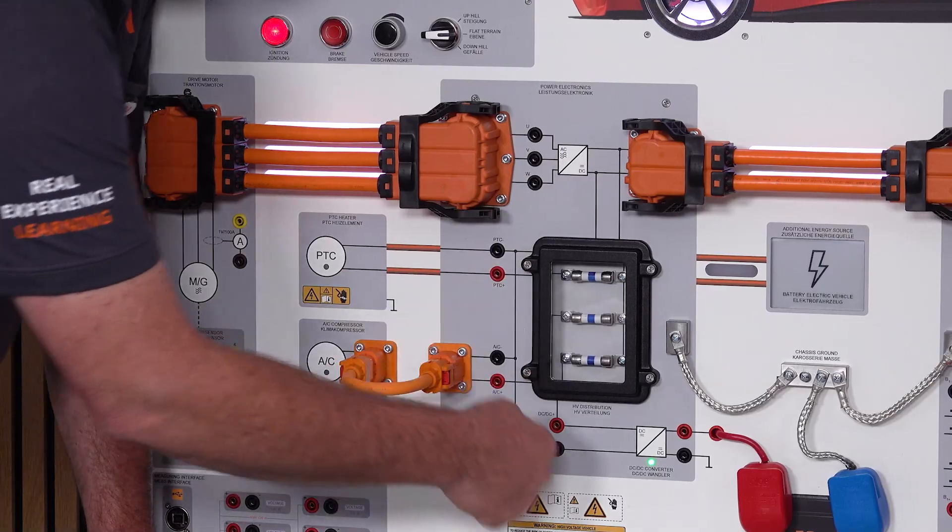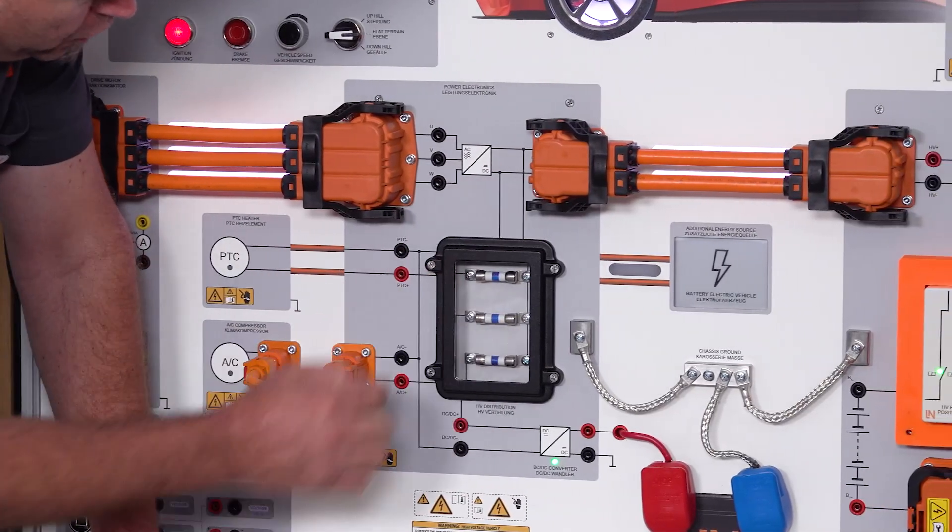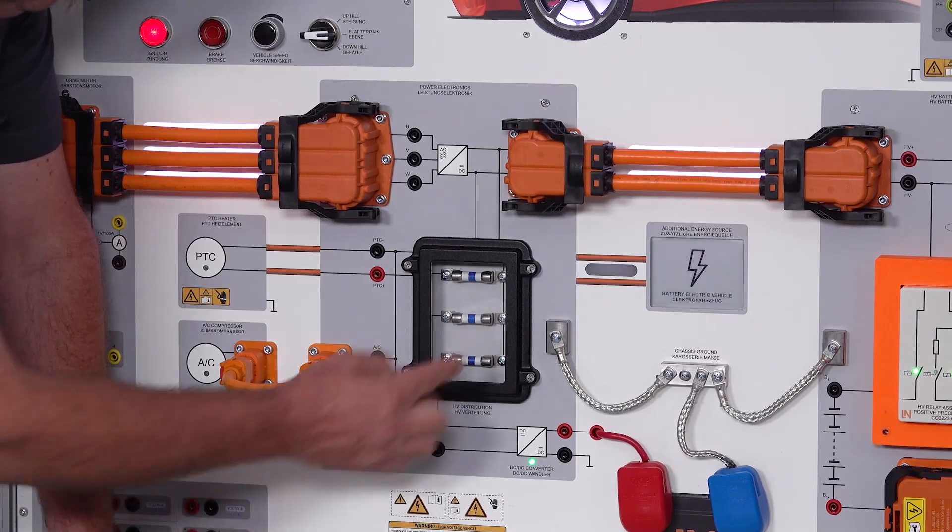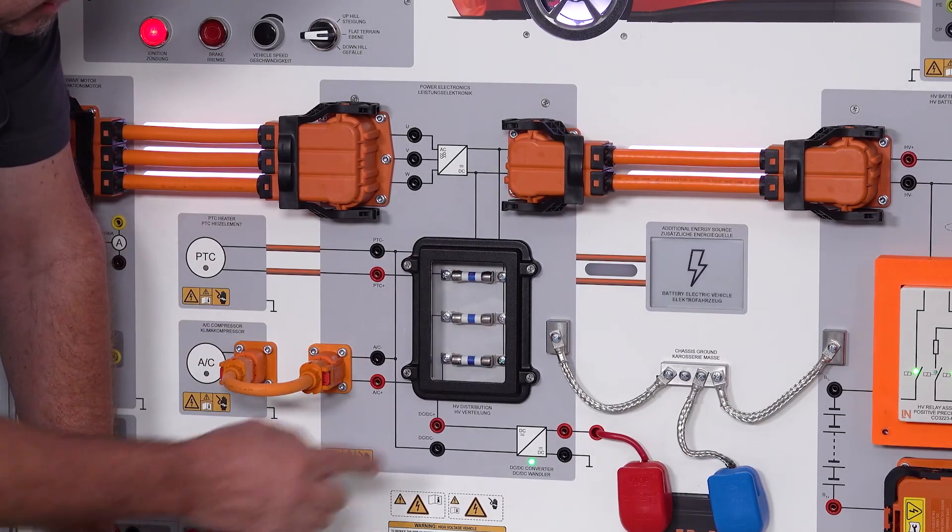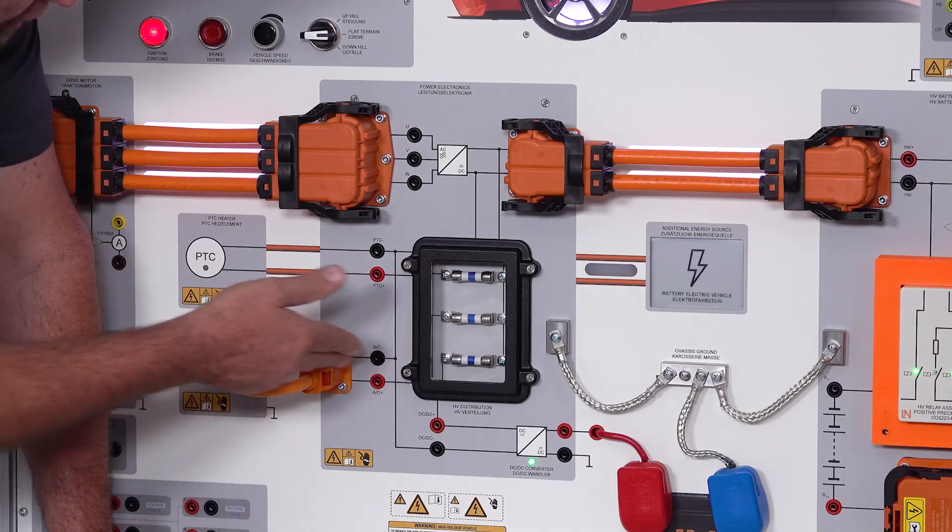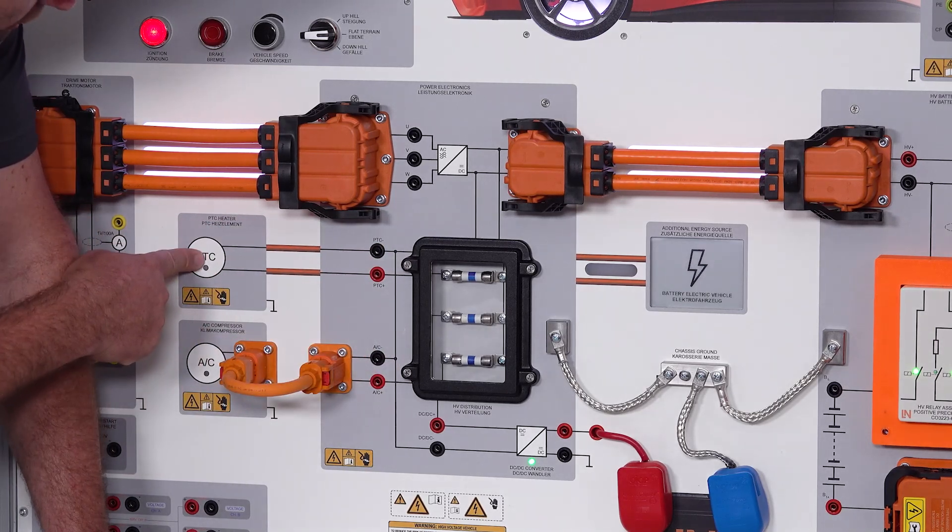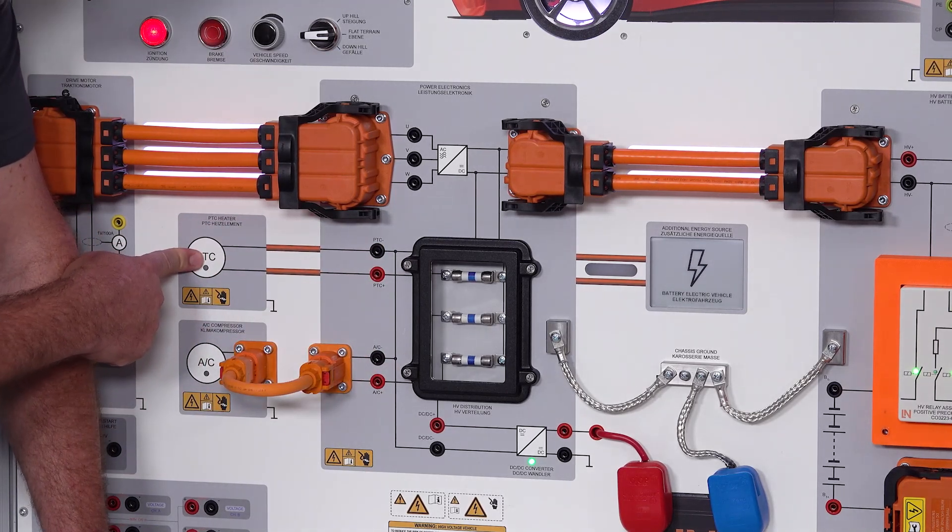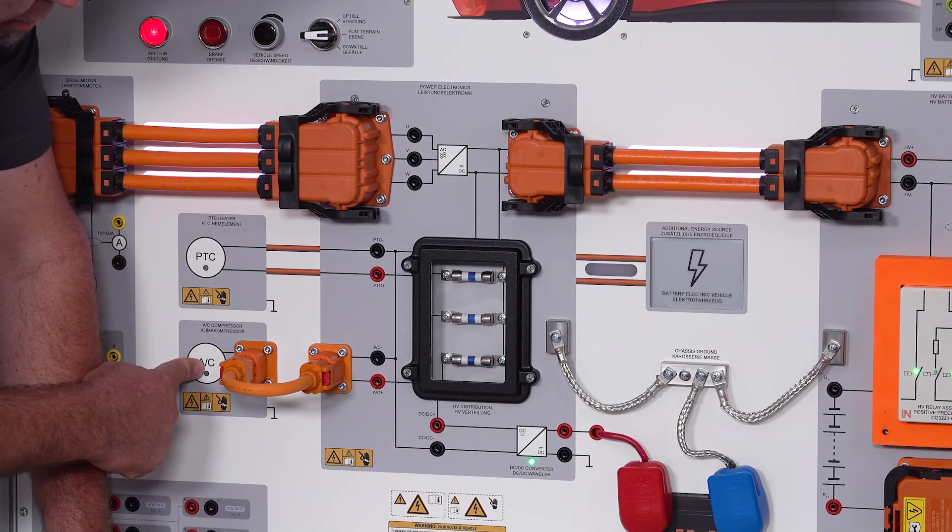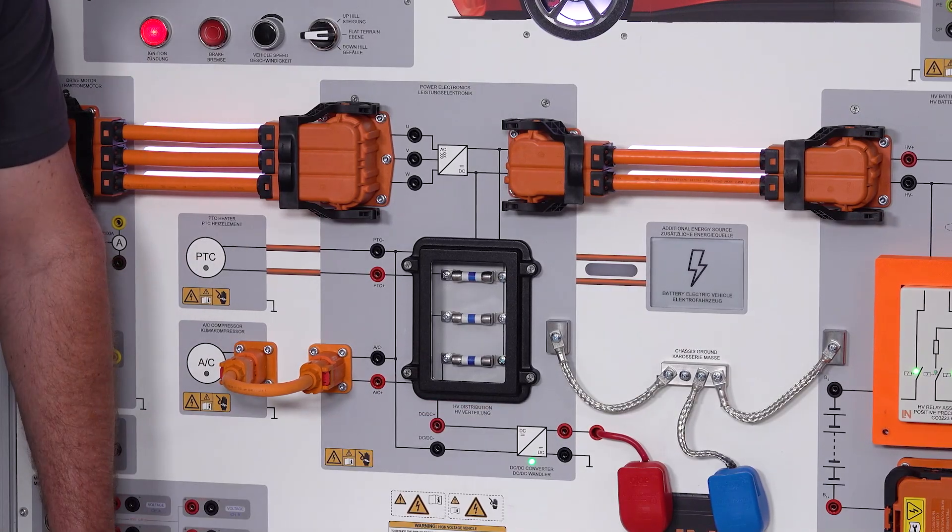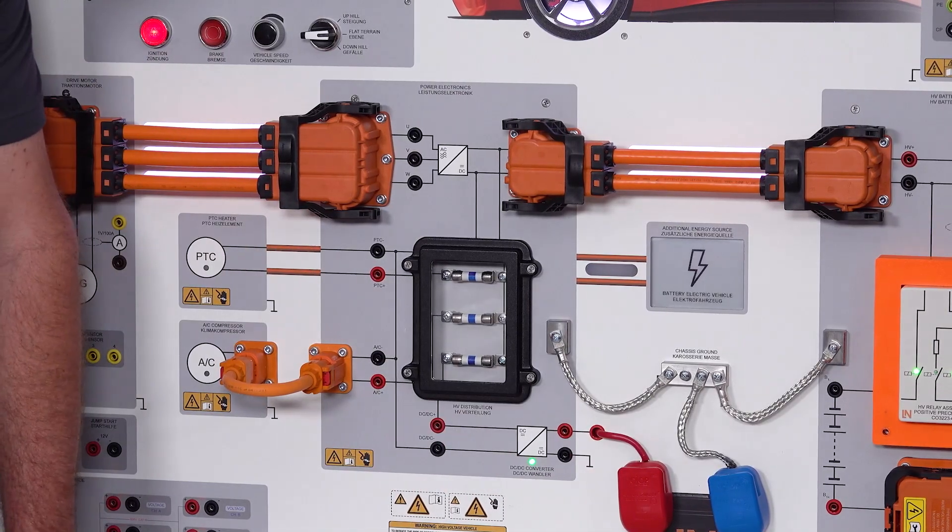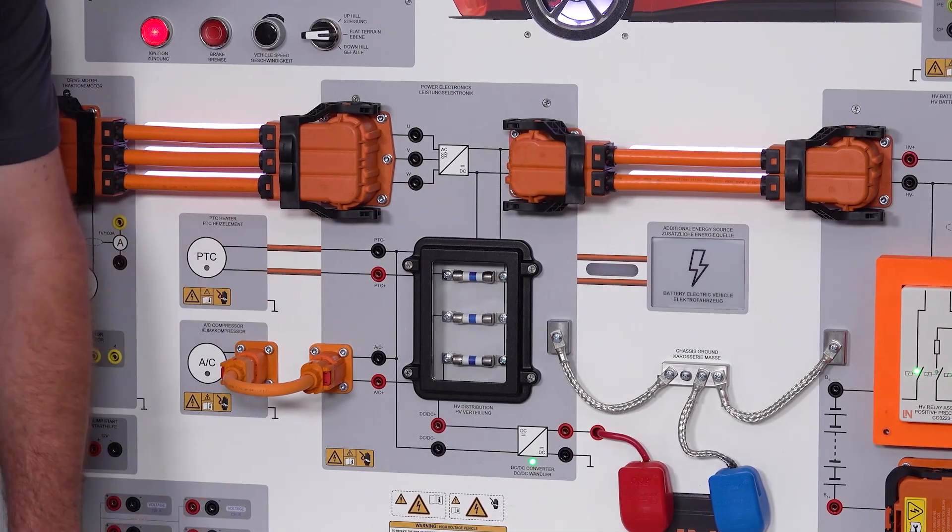Coming back to our inverter here, we can see that we've got three fuses inside of our high-voltage distribution. We've got essentially a bus bar there with the three fuses that go along supplying current to our consumers, such as the heating, PTC heater, or the high-voltage air compressor.